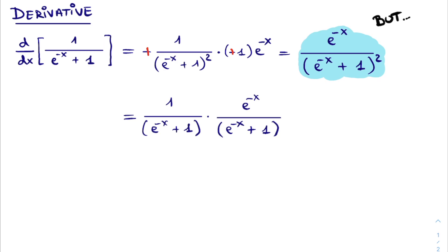First, we split the fraction into 2, separating the bracket squared in the denominator. Doing this, we can recognize this first fraction as the sigmoid function itself again.